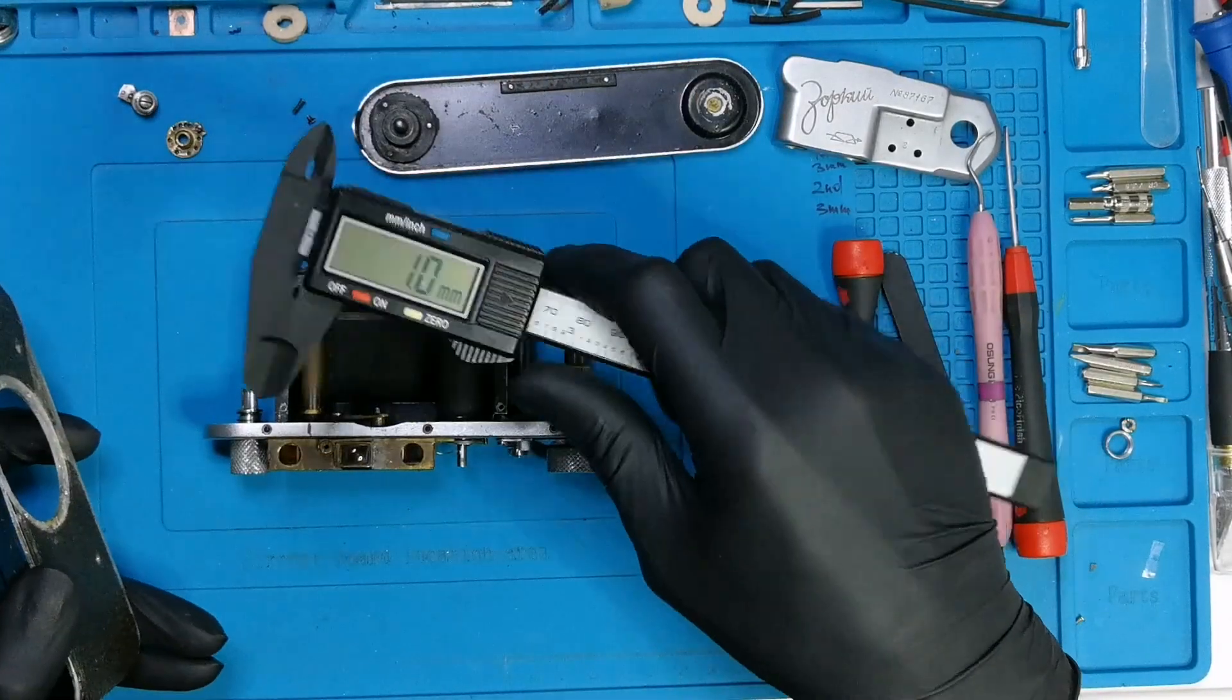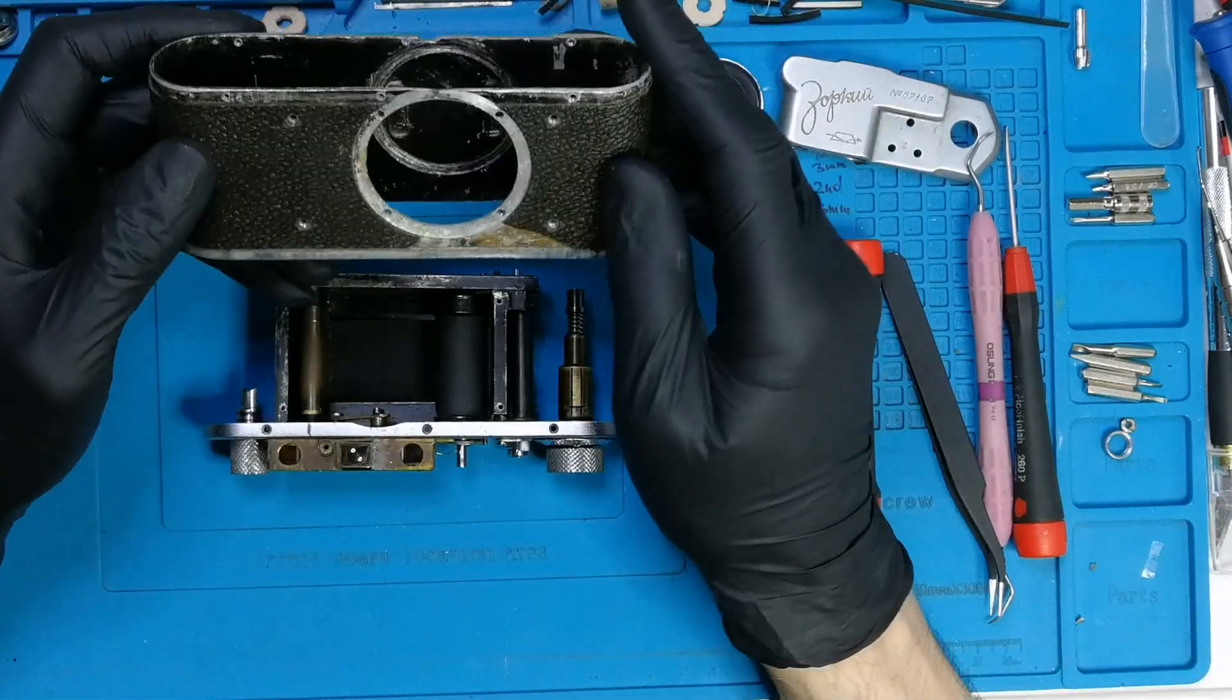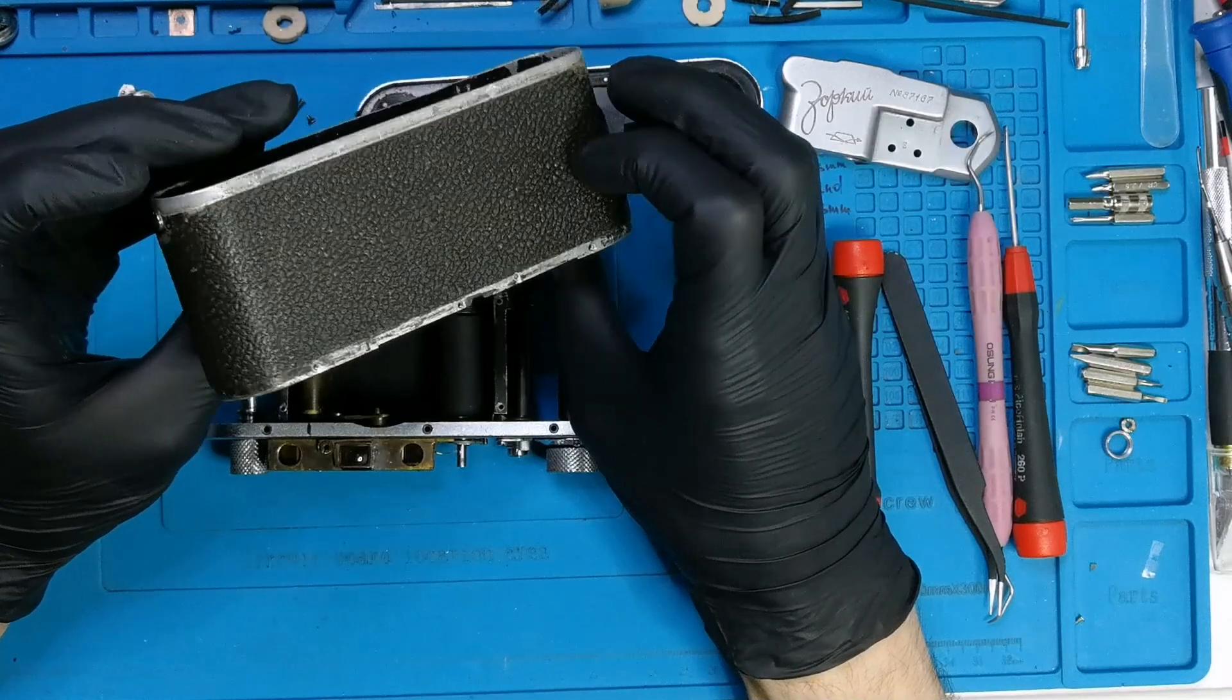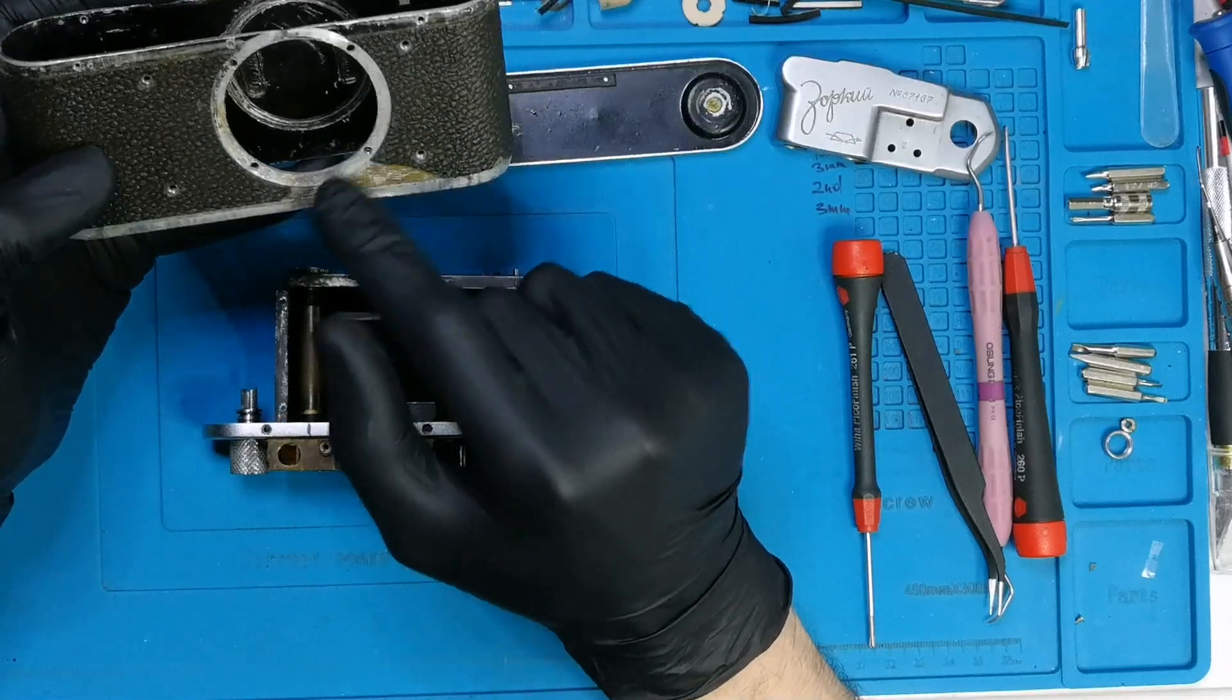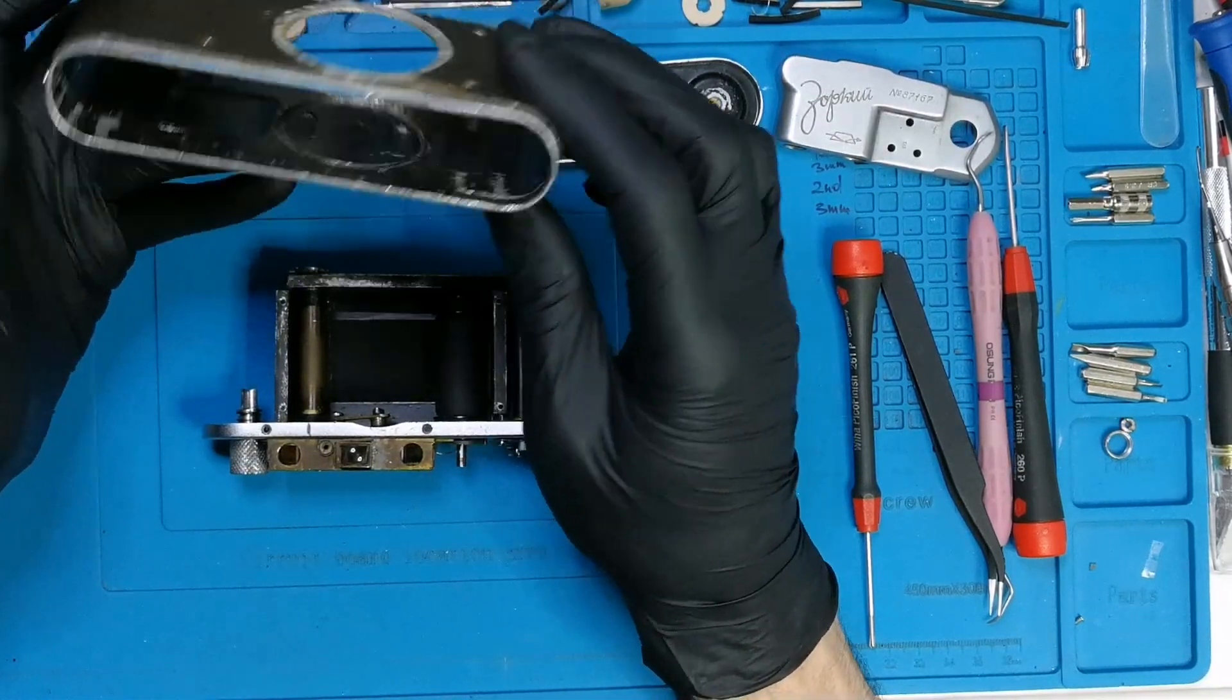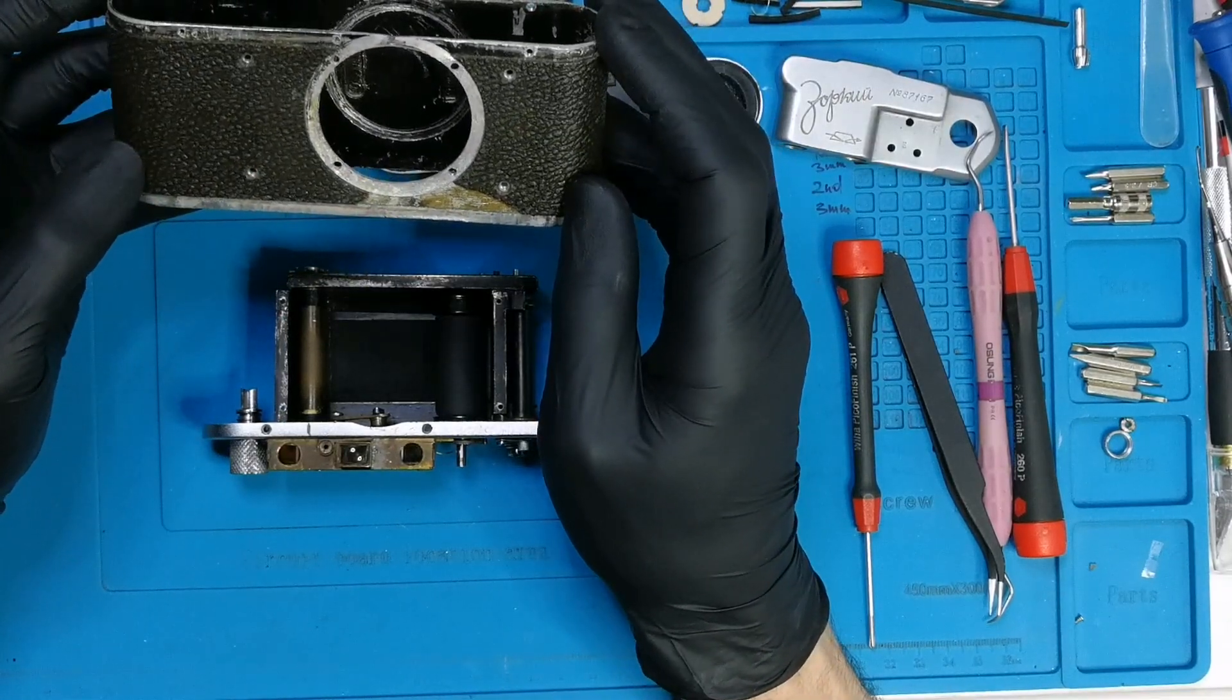Now it's closer to 1 mm, so it's a 1 mm thick leatherette. It would be quite easy to replace it. I only need to make a round cutout here, round cutout for the lens mount, 4 perforations for the screws, and that's about it.